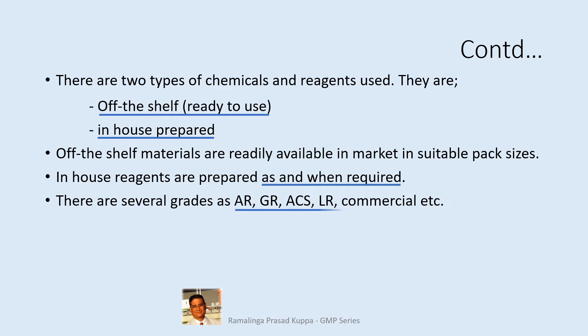There are several grades such as AR, GR, ACS, LR, and commercial. The difference between AR grade, GR grade, or ACS grade and LR grade or commercial grade is that AR grade is an analyzed reagent — that means it is a certified reagent. You can see the detailed certificate of analysis printed on the label of these reagent bottles. These chemicals are used for quantitative analysis purposes. LR or commercial grades are generally used for qualitative analysis. In USP, in the reagents, indicators, and solutions chapter, there is a specific requirement to use ACS grade wherever it is prescribed, so the type of reagent should be as prescribed in the compendia.